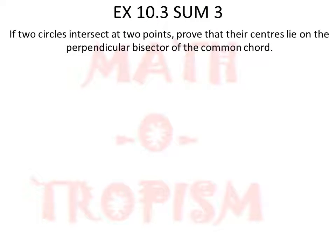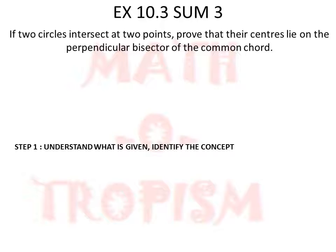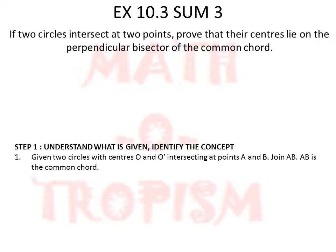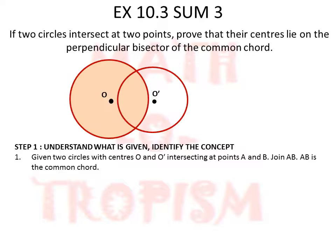First we need to understand what is given and identify the concept with which we can prove. Given are two circles with centers O and O', intersecting at two points A and B. We join AB, and this AB is the common chord.